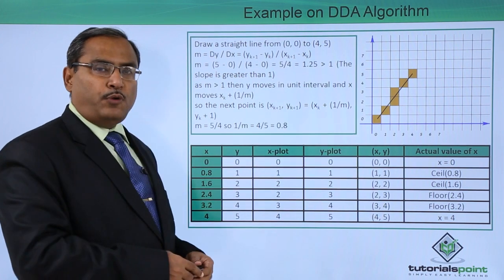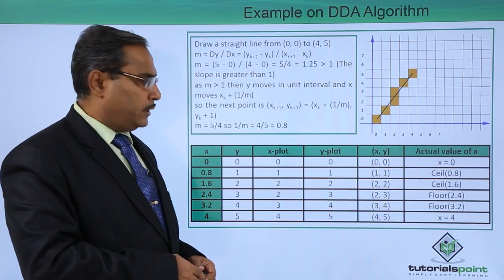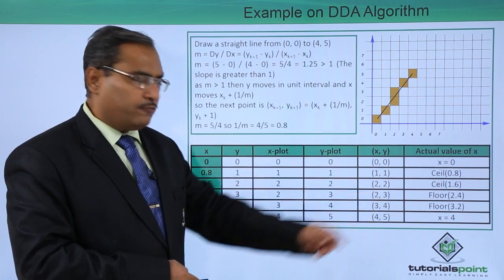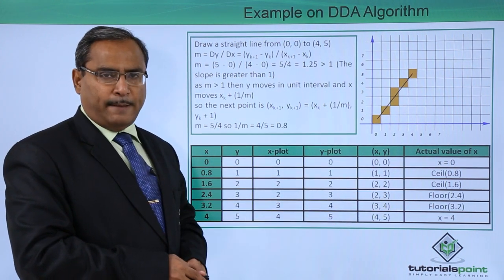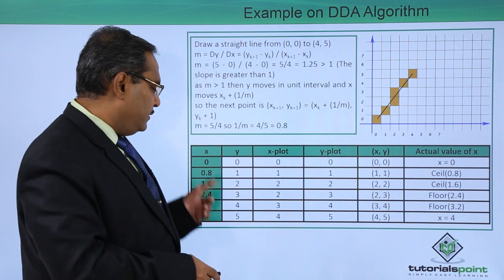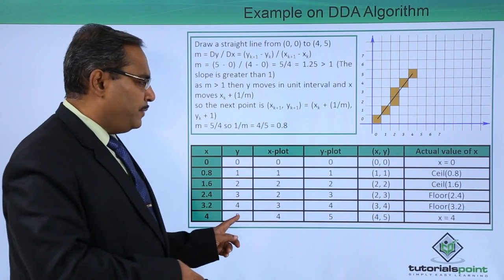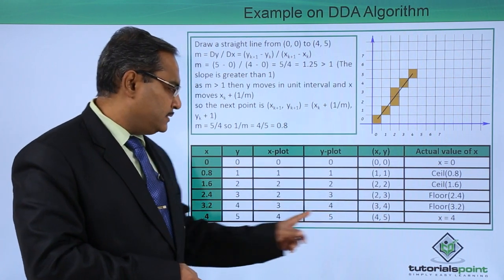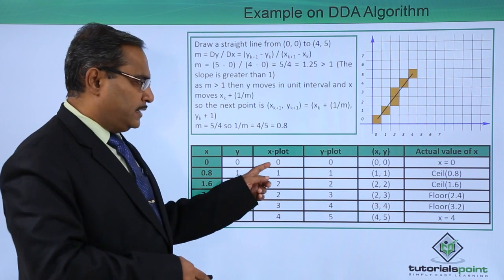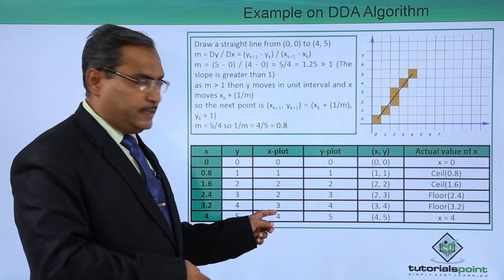But here you see these fractions cannot be plotted. Here we are applying ceil or floor functions, also we could have applied round functions, and then these y values will remain as it is. But for these x values it has got the nearest integer.